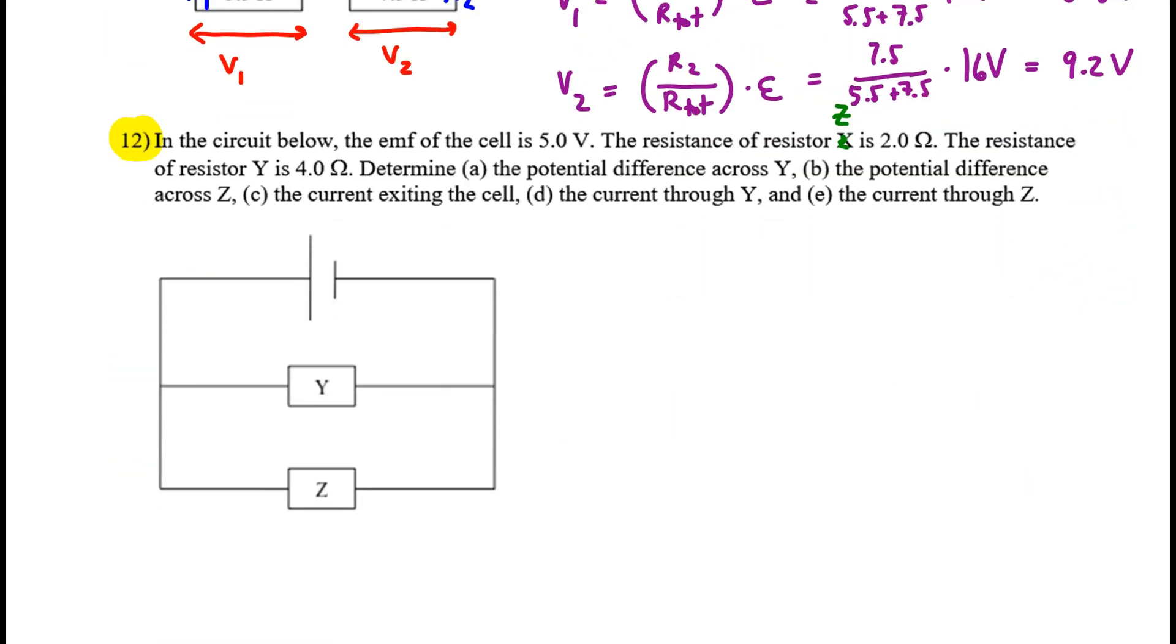On to number 12. We know that the EMF is 5. The resistance of Z is 2 ohms, and the resistance of Y is 4. Find the potential difference across Y. Let me try that again. Find the potential difference across Z. Find the current exiting the cell, the total before it splits up. Then find the current that goes through Y, and also the current that goes through Z.